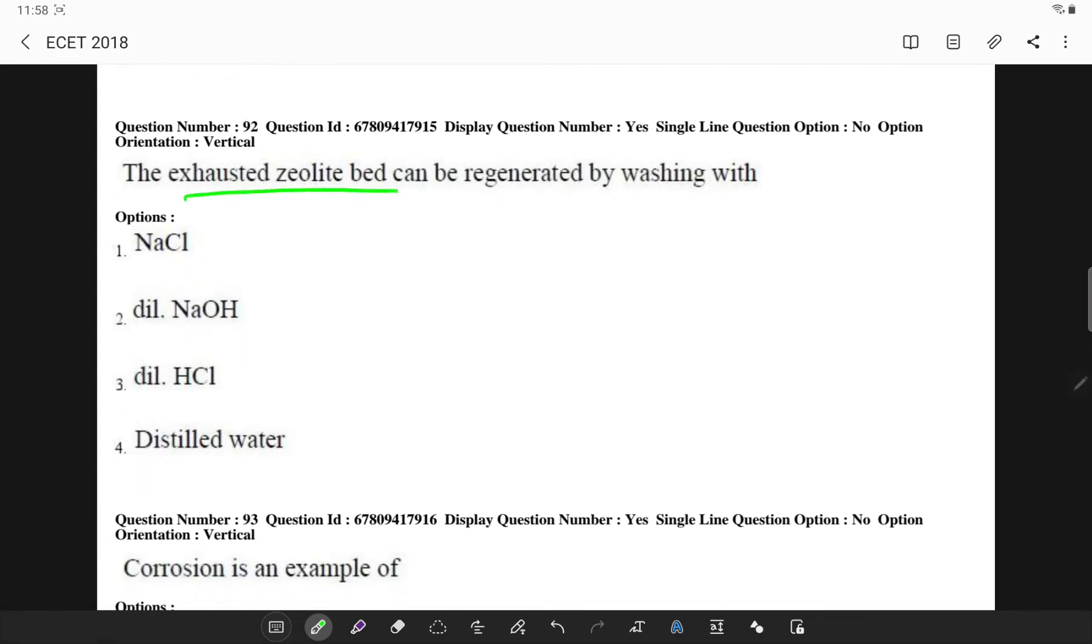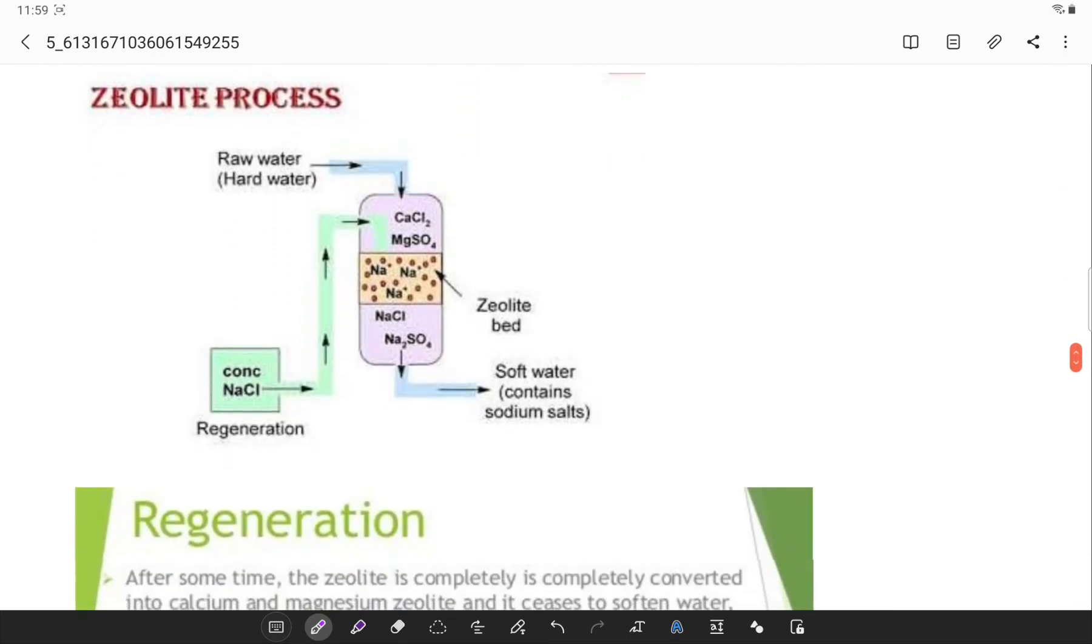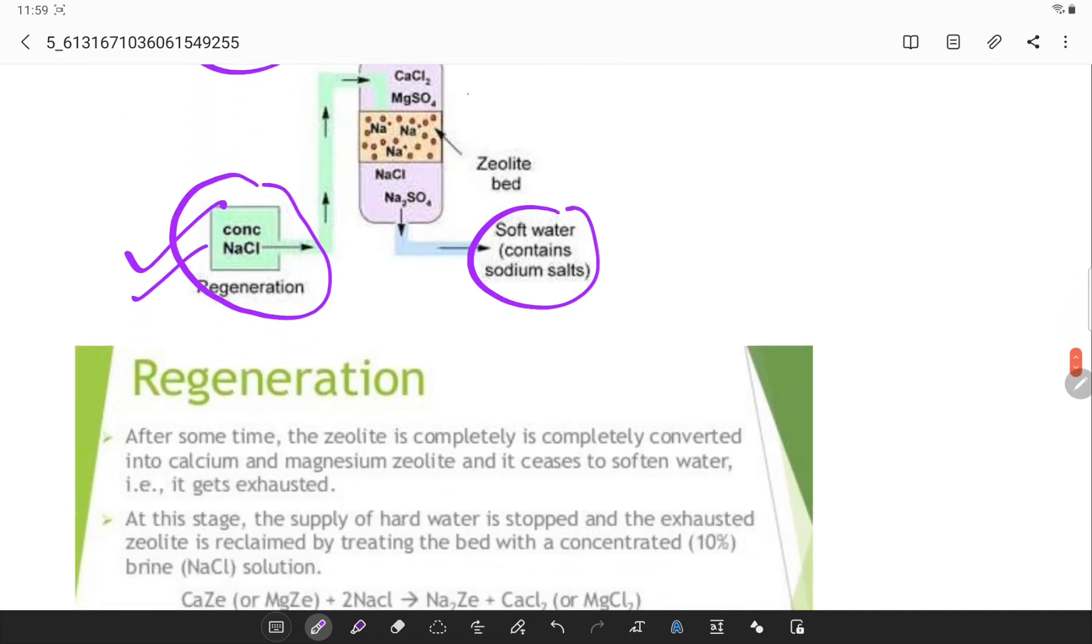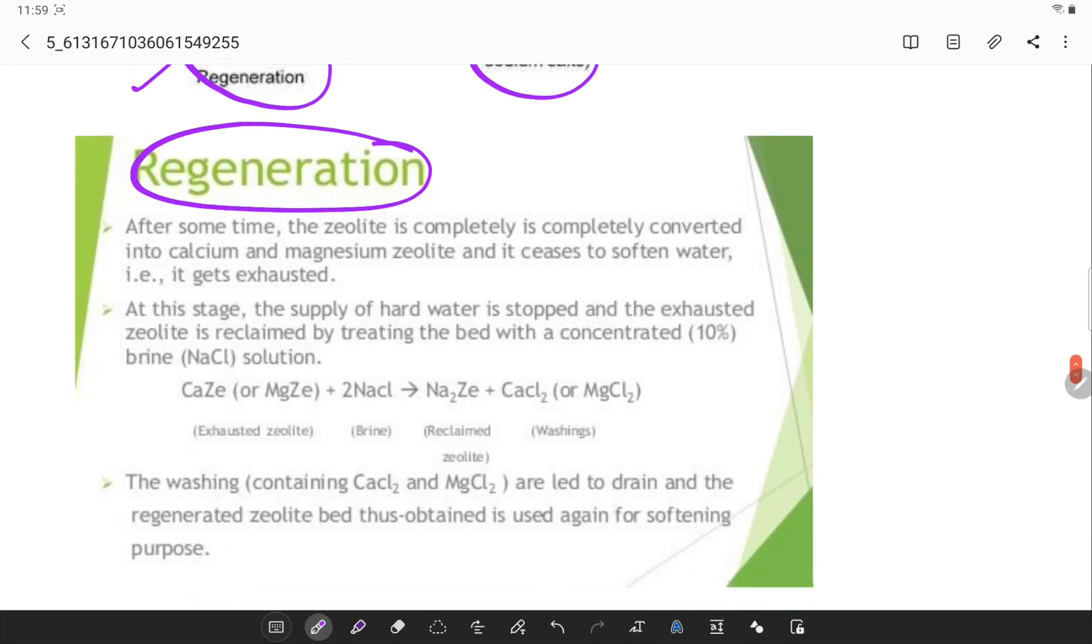The exhausted zeolite bed can be regenerated by washing with, this is a direct question, it can be regenerated when you wash with sodium chloride. This is a zeolite process in which regeneration is done through concentrated sodium chloride. We have raw water as hardware as input and soft water as output. You see the reagents also, zeolite bed and everything. So regeneration, concentrated 10% brine solution is used for this particular process.